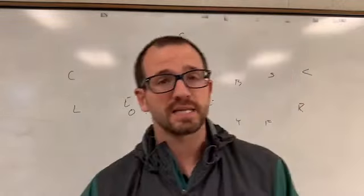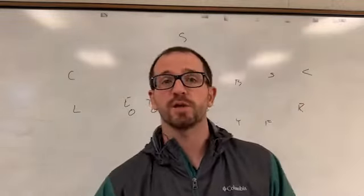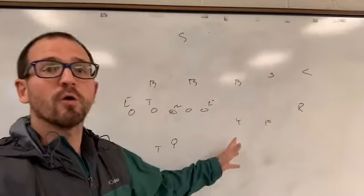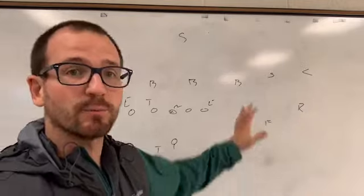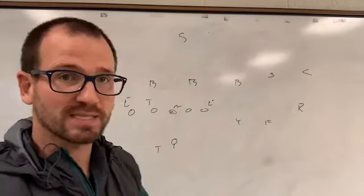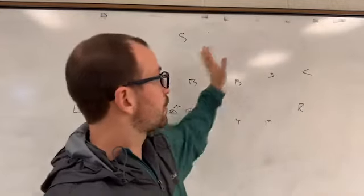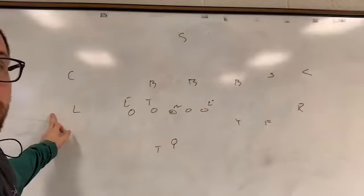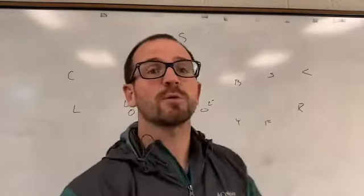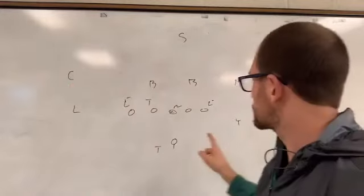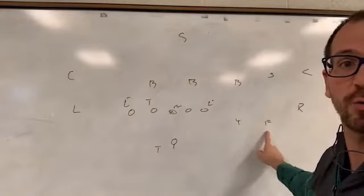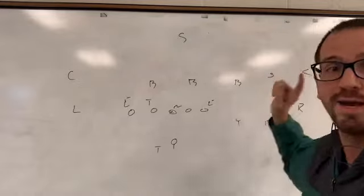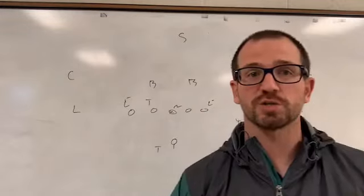If you've seen my other video, I went over the go concept which is attacking to the three-man side. The go concept attacks this side, and the choice concept is to the single receiver side. When you hit the go route enough and the defense over-commits to stop the go, then you run the choice route.